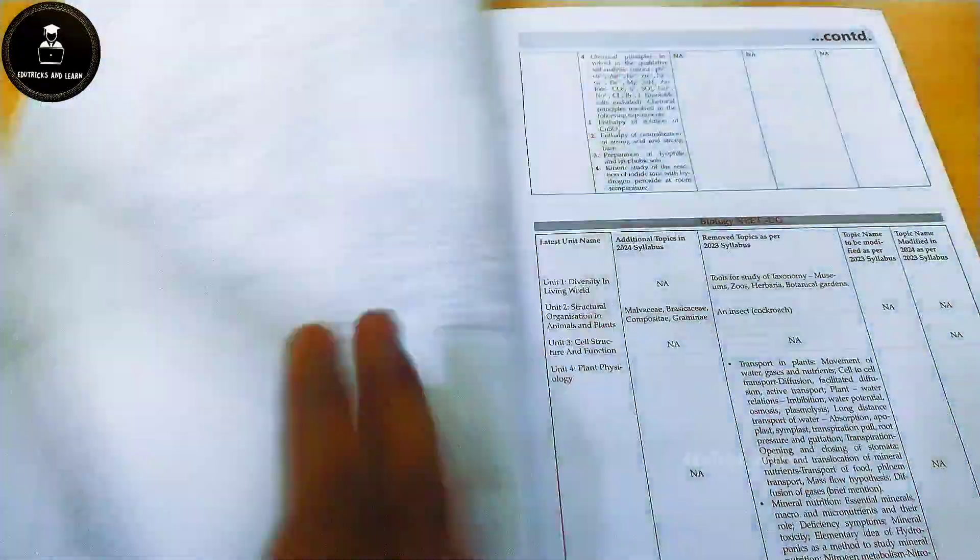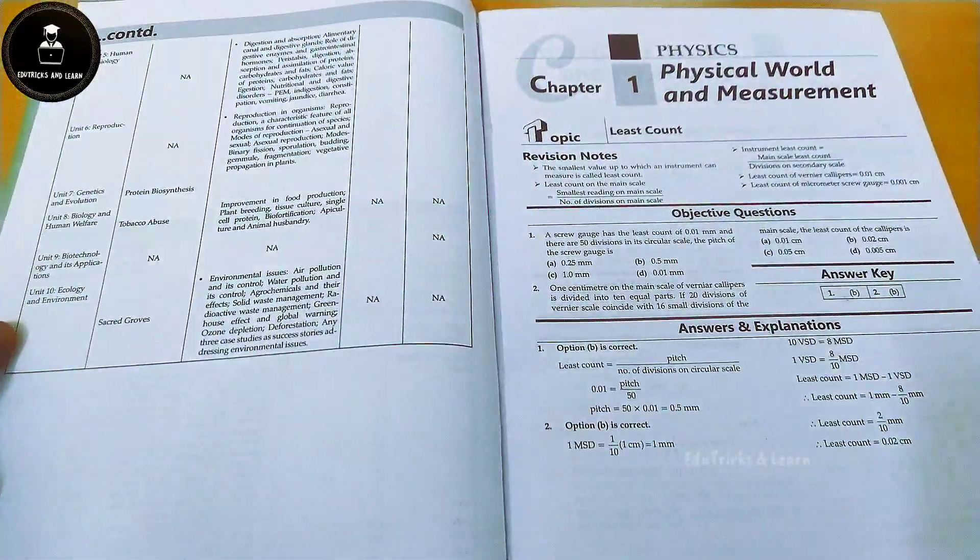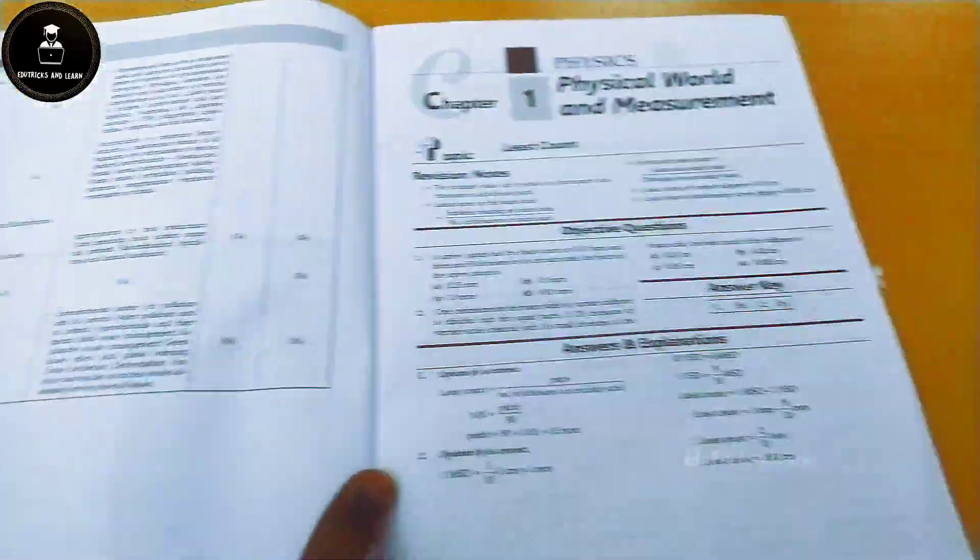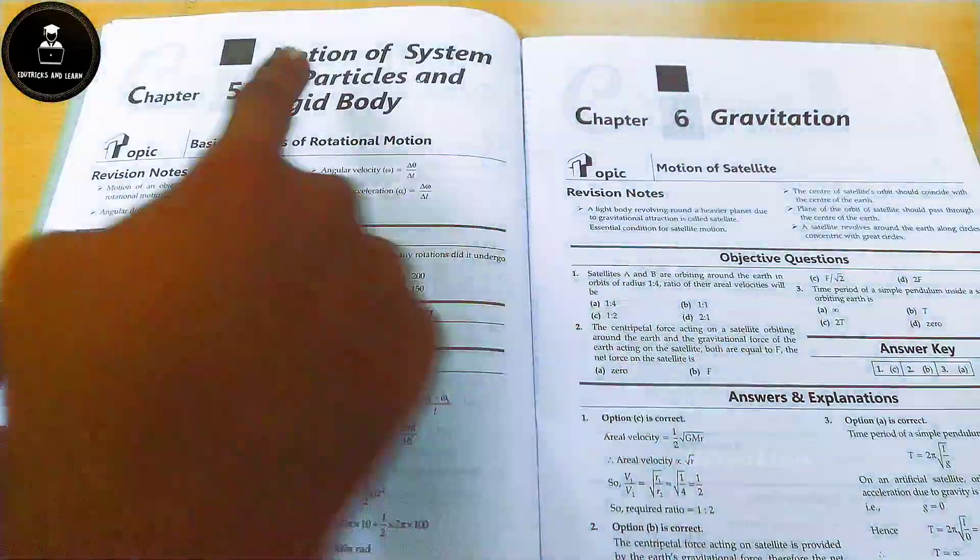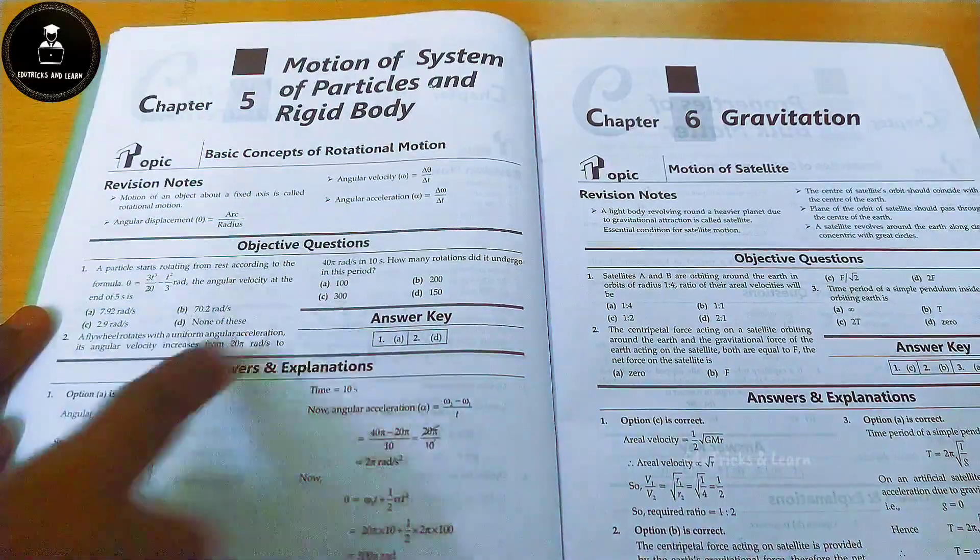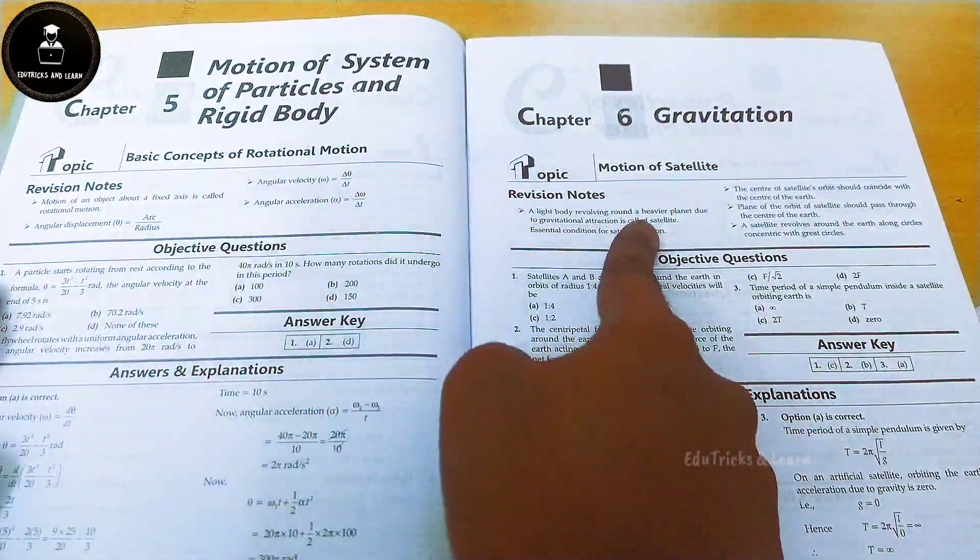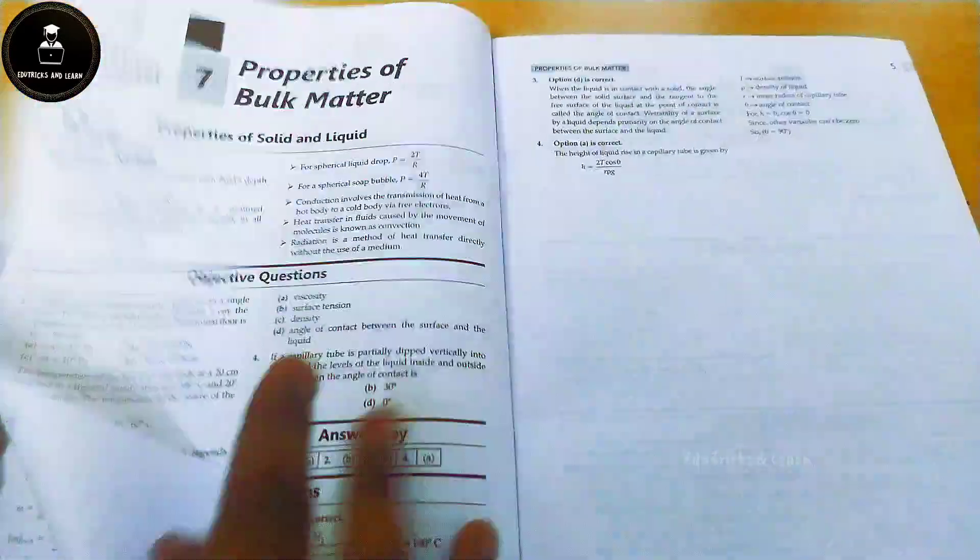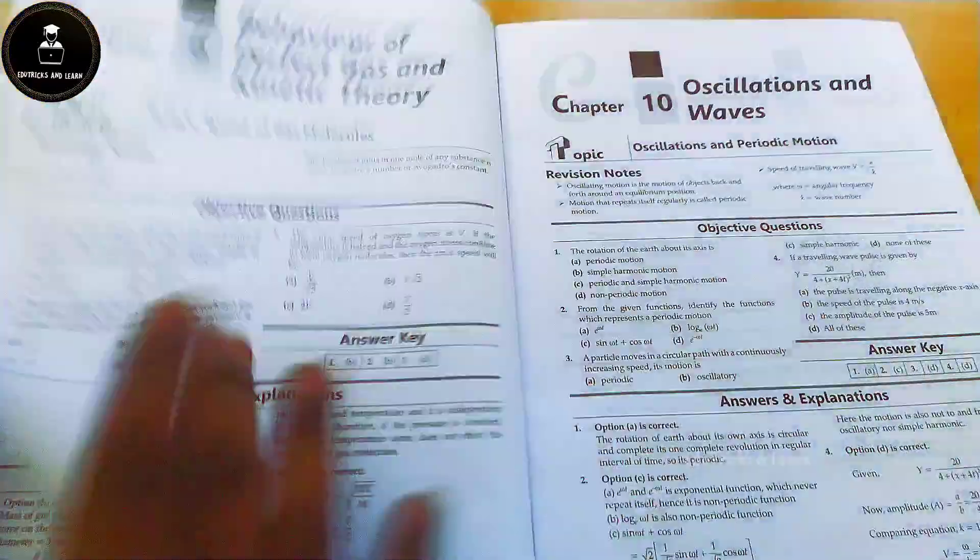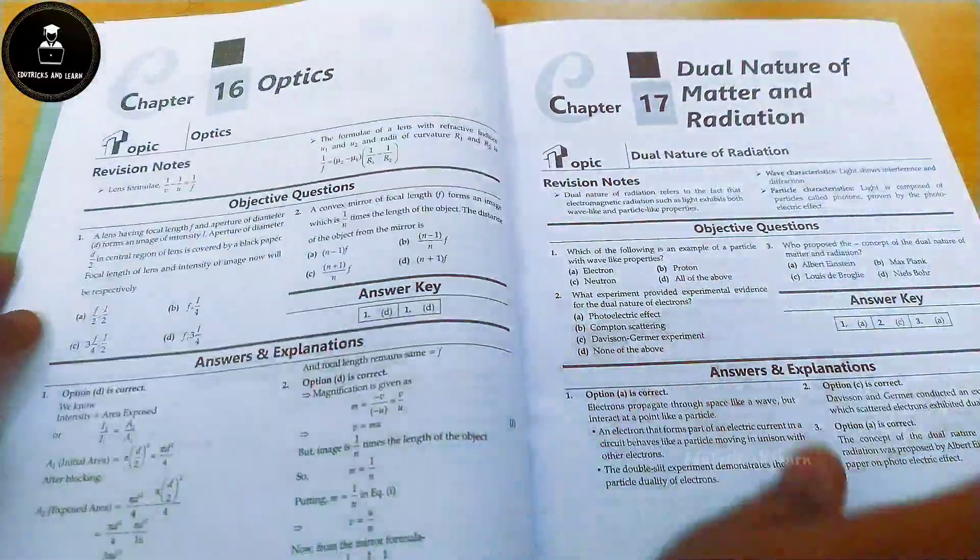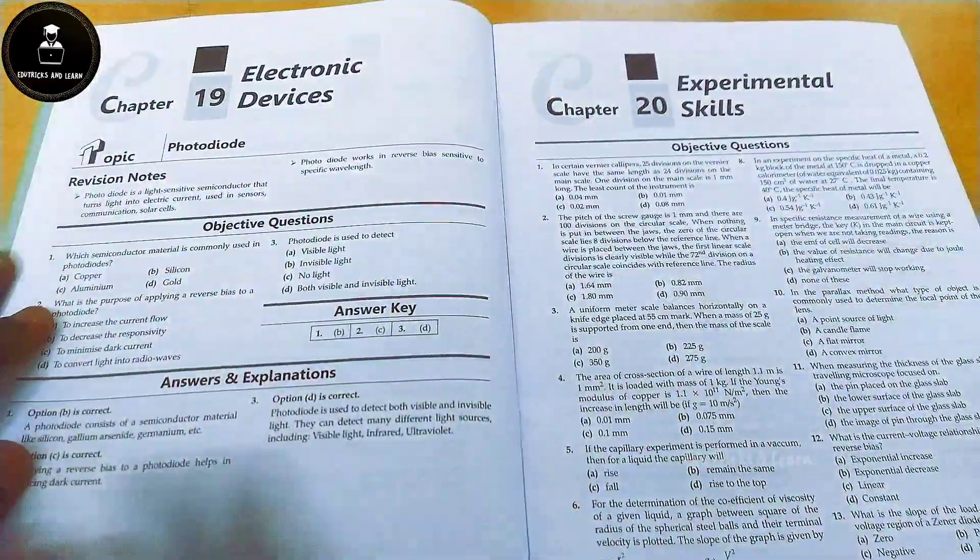Starting with chapter one, Physical World, in that one topic is added. They have given the one topic revision notes, one topic questions, and that one topic answer and explanation for the objective type question. For whichever chapter we have in the new syllabus, whatever the topic they have added, they have included in this part and explained it in the form of revision notes, objective type questions, and answers.